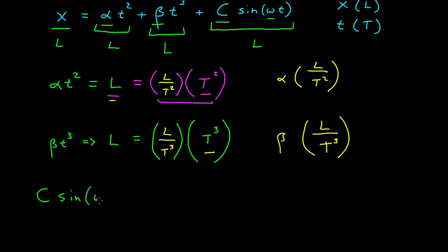C sine of omega t. The omega t has to be dimensionless, we know that. And sine of a dimensionless number is also dimensionless. So this entire sine omega t is dimensionless. So for this to have units of length, that tells us right away that the dimension of C must be length.